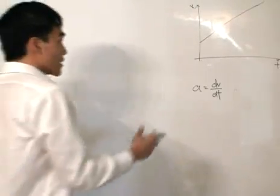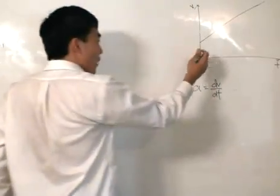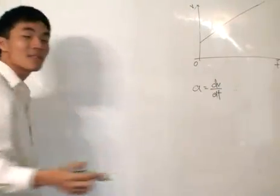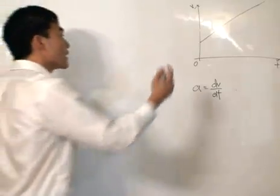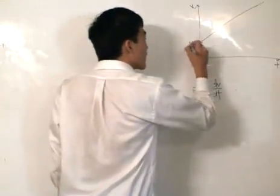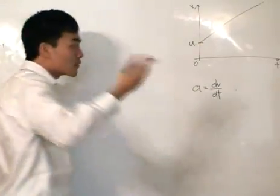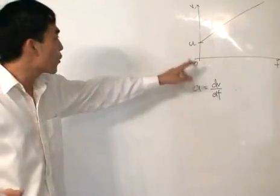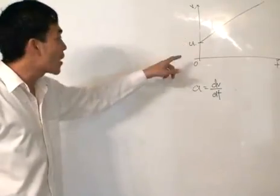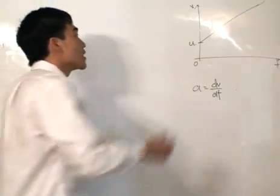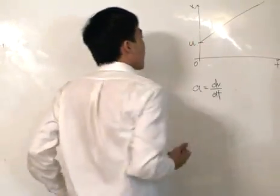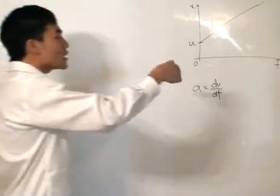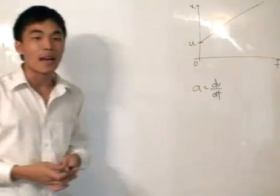Now why can the graph start when it's not at v equals 0? Well, basically because v represents the final velocity. So the particle can be moving at an initial velocity before time starts. At time 0, the particle is already moving at an initial velocity which we mark as velocity u. And from this simple graph, we can draw out all sorts of equations.